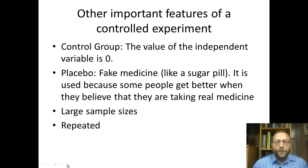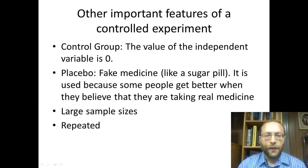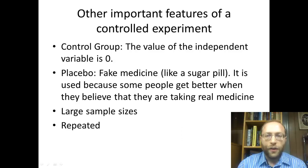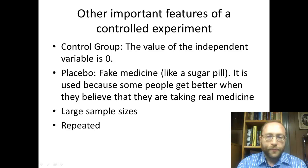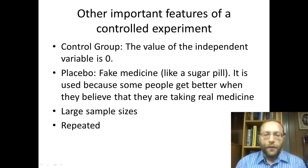There are some other important features in a controlled experiment. One is that you use a control group, and this gives you something to compare. In the control group, the value of the independent variable is zero. So in the Trident experiment, the control group would be the group which doesn't chew Trident — it either doesn't chew anything at all, or it would be chewing non-Trident gum. You also have an experimental group, which would be the group that is chewing Trident. There could be different values in that, like different flavors of Trident.